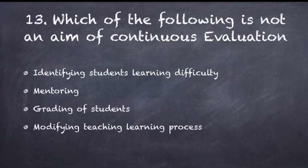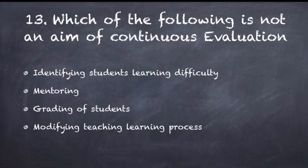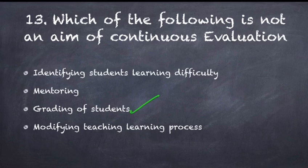Which of the following is not an aim of continuous evaluation? Options: identifying students' learning difficulty, mentoring, grading of students, modifying the teaching-learning process. The answer is grading of students — that is the third option.